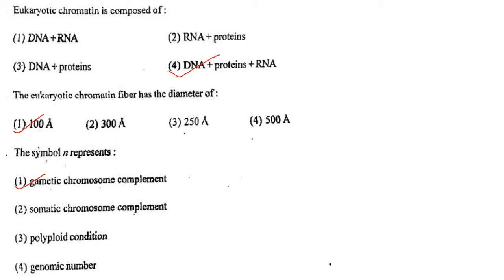Next one: The symbol N represents option 1, gametic chromosome complement; option 2, somatic chromosome complement; option 3, polyploidy condition; option 4, genomic number. Answer is option 1: gametic chromosome complement.